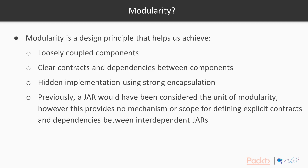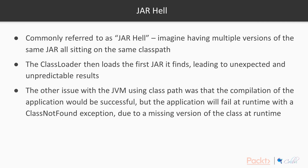Previously a JAR would have been considered the unit of modularity, with a JAR being the output of the compile phase of a Java application. The problem is that it provides no mechanism and no scope for defining explicit contracts and dependencies between interdependent JARs. JARs, once they're built, just become these standalone executable things. When you launch one, it launches with a bunch of implicit dependencies, expecting other JARs and compiled classes to exist on the class path. Maven helps us to solve some of these problems, but doesn't give us a really strong modularity contract between JARs, and we end up with what's commonly referred to as JAR hell.